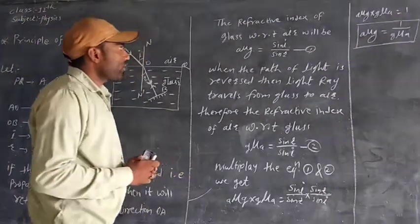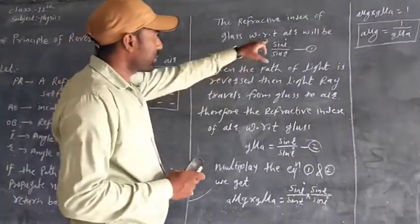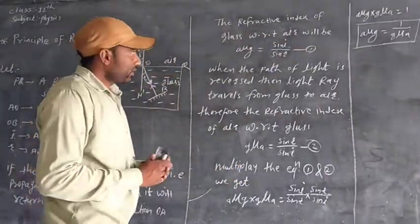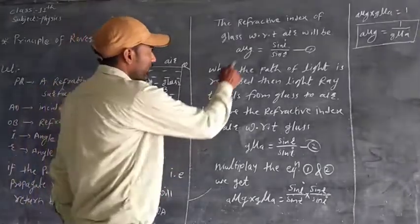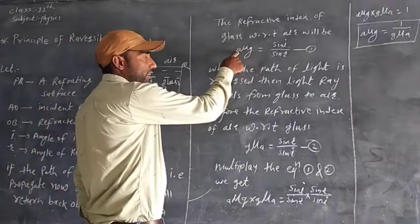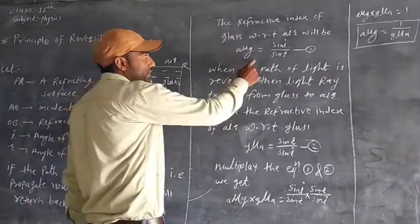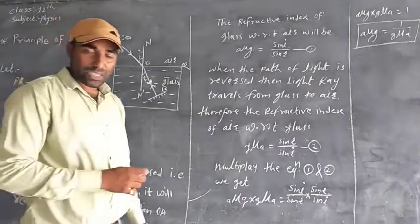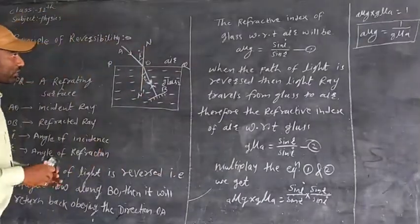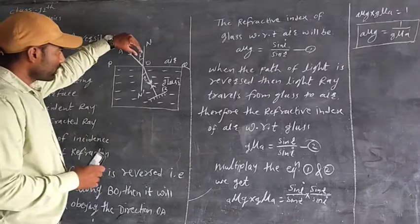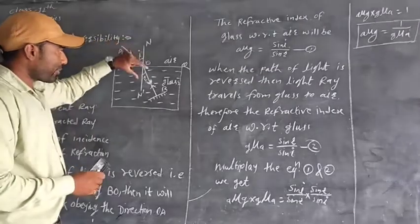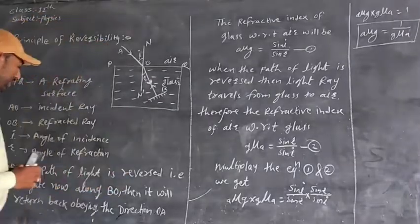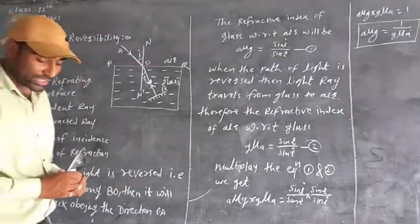The refractive index of glass with respect to air — glass with respect to air. A mu G, by Snell's law, is equal to sine I over sine R. This is equation number one.